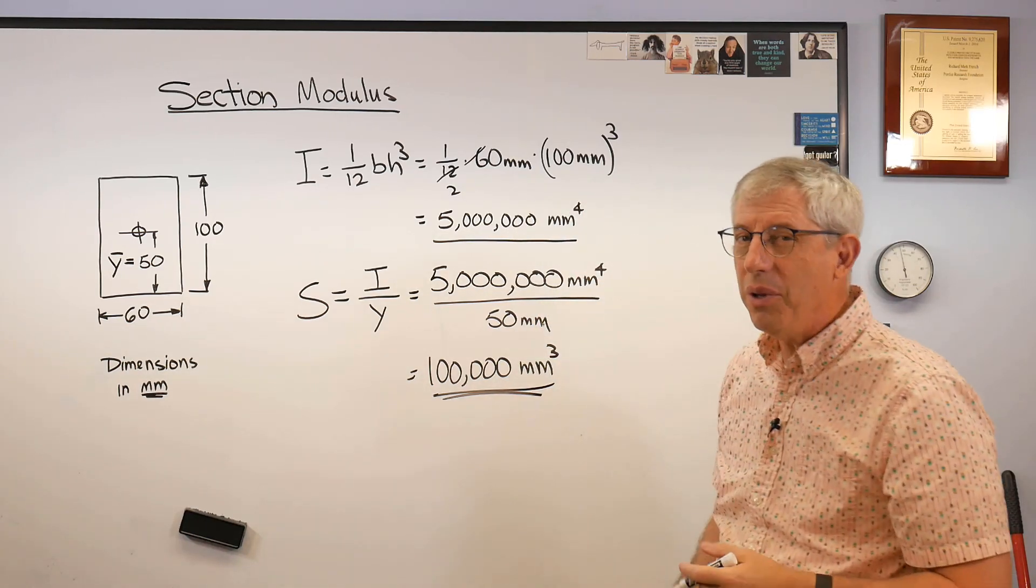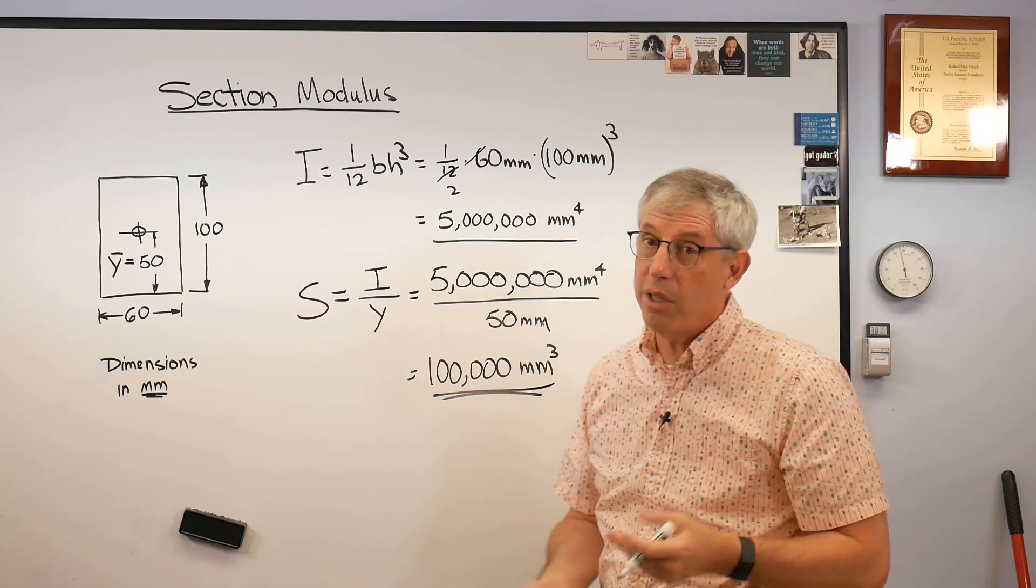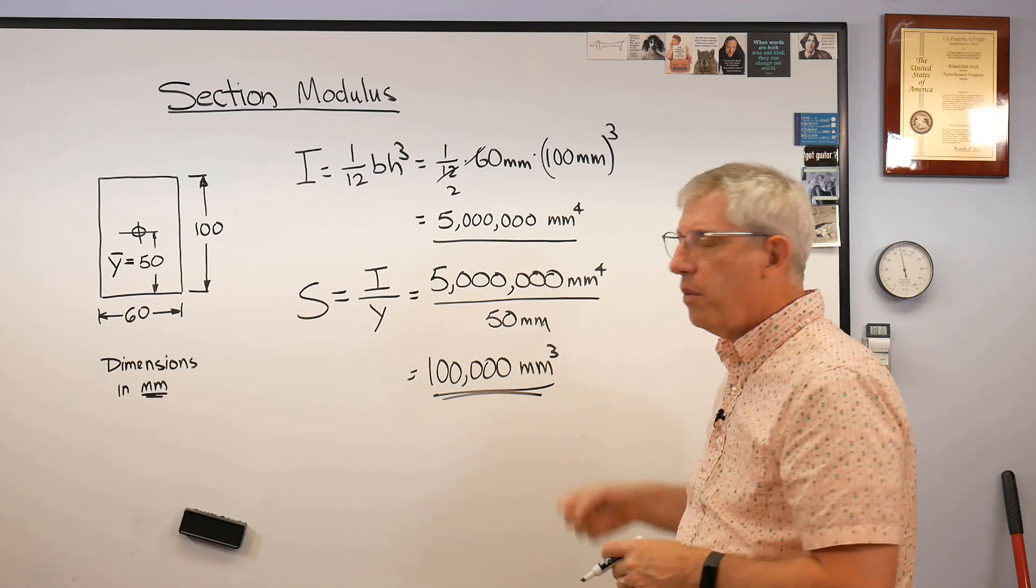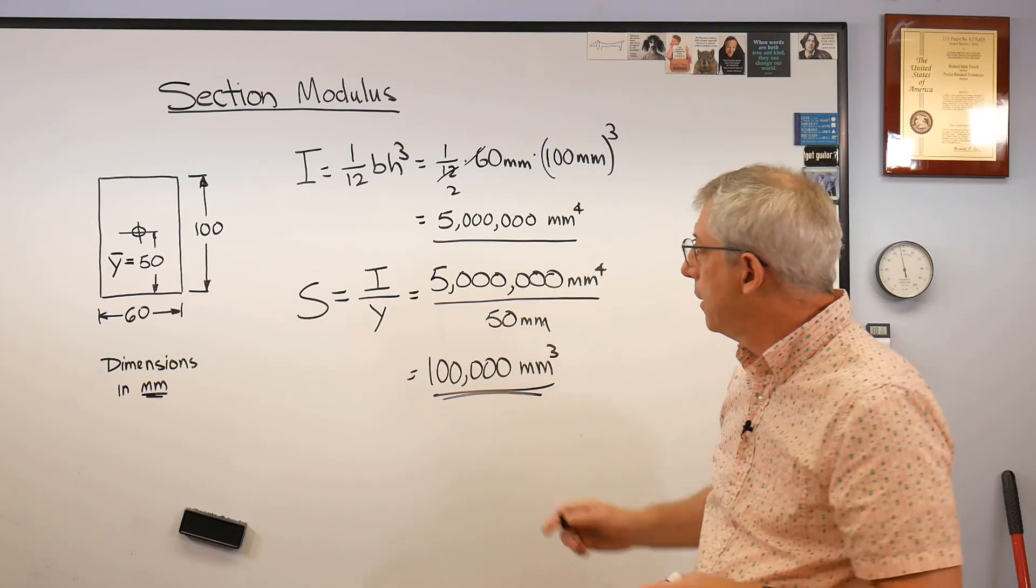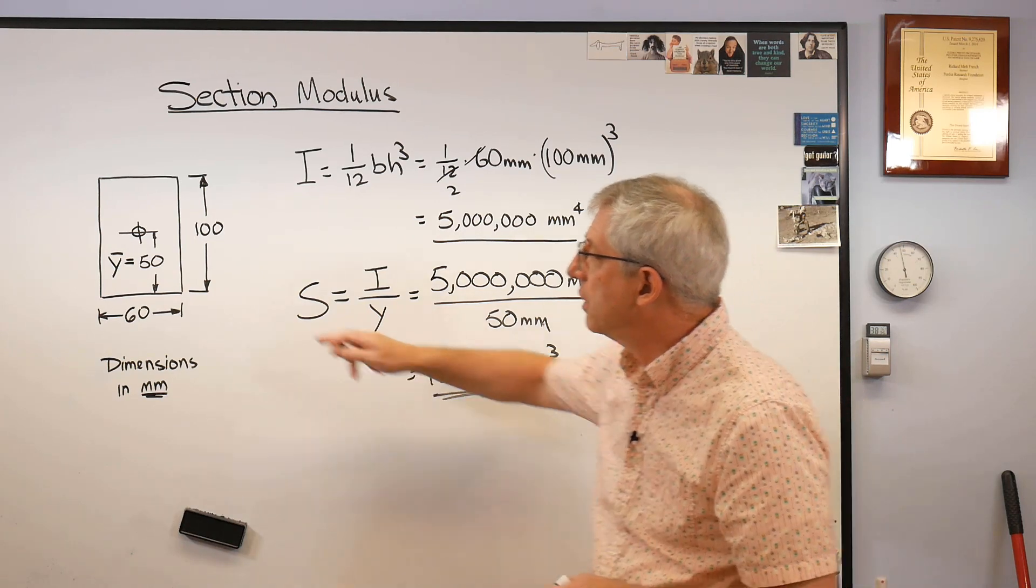And not too surprisingly that comes out 100,000 millimeters cubed. Now millimeters cubed looks like it ought to be a volume. That's cubic millimeters. Well it's millimeters cubed but it's not a volume. It's millimeters to the fourth over millimeters. So that's the section modulus of that.